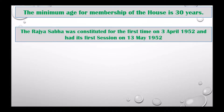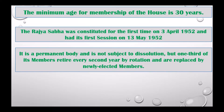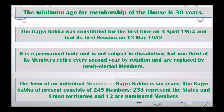The Rajya Sabha is a permanent body and is not subject to dissolution, but one third of its members retire every second year by rotation and are replaced by newly elected members. The term of an individual member of Rajya Sabha is six years. Rajya Sabha at present consists of 245 members, of which 233 represent the states and union territories and 12 are nominated members.